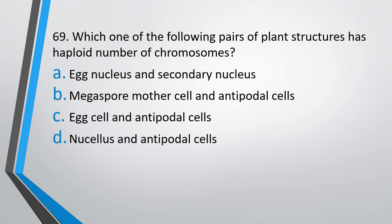Question No. 69. Which one of the following pairs of plant structures has a haploid number of chromosomes? Egg nucleus and secondary nucleus; megaspore mother cell and antipodal cells; egg cell and antipodal cell; or nucellus cell and antipodal cell. The correct answer is option C — egg cell and antipodal cell are haploid.